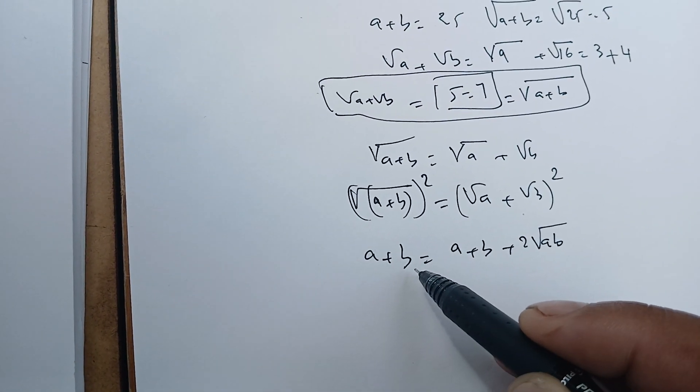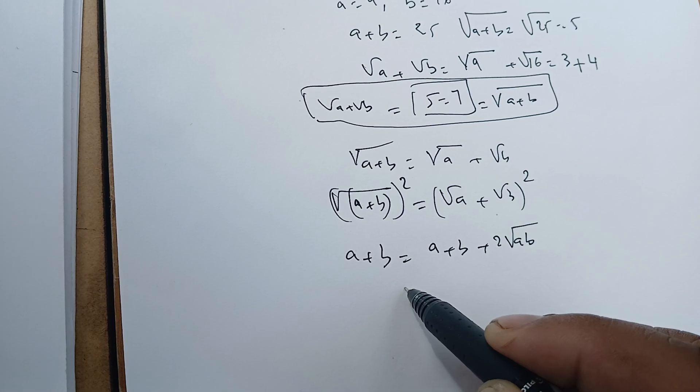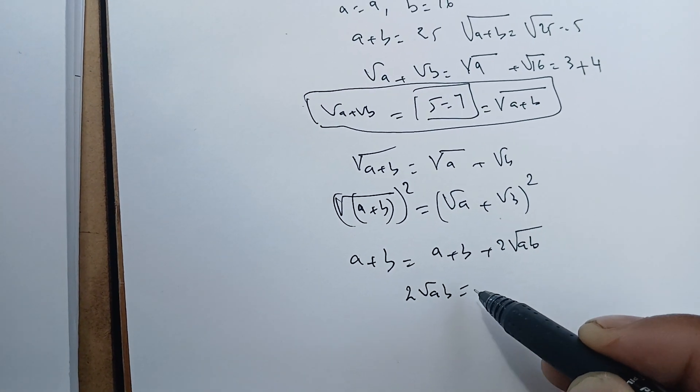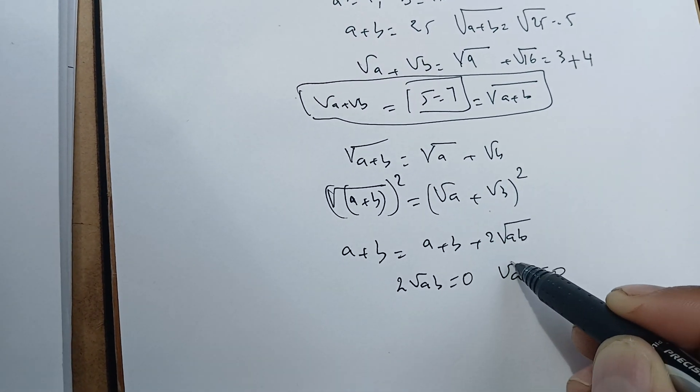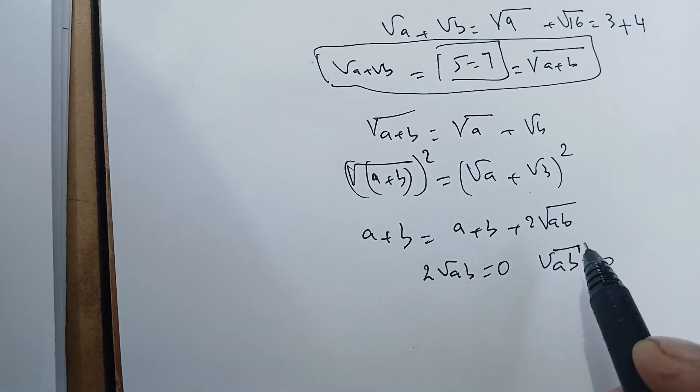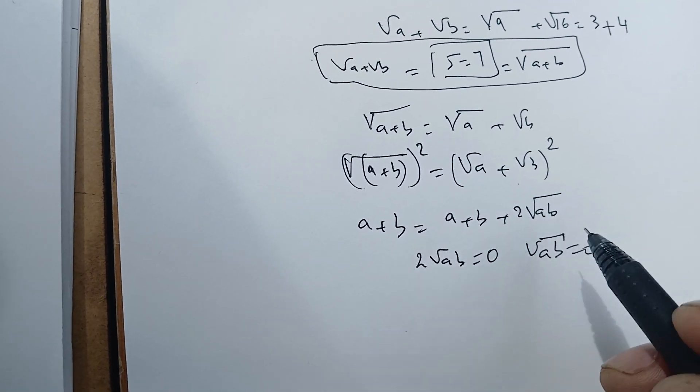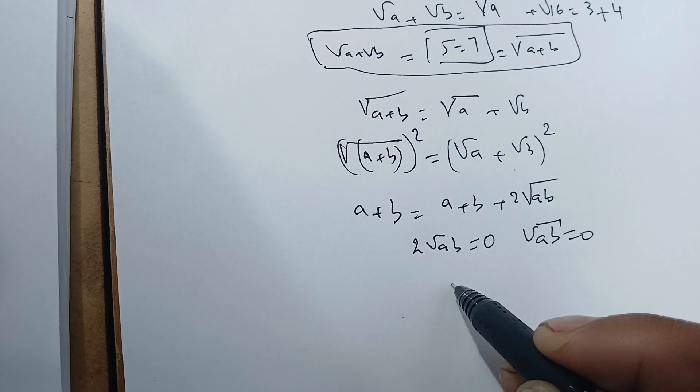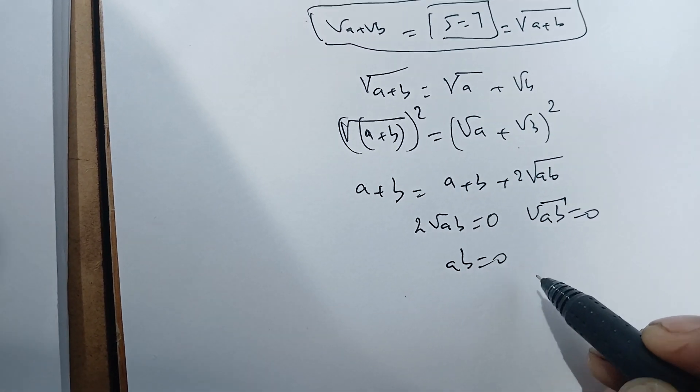Therefore, subtracting a plus b from both sides, we get 2 square root of ab, and dividing by 2, we get square root of ab equals zero. So this means that if we square again, ab equals zero.